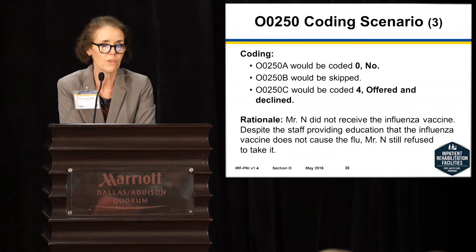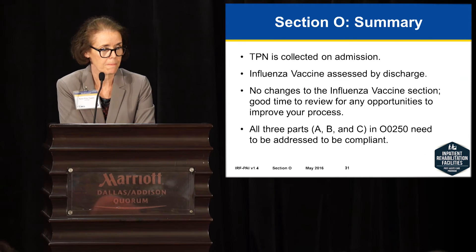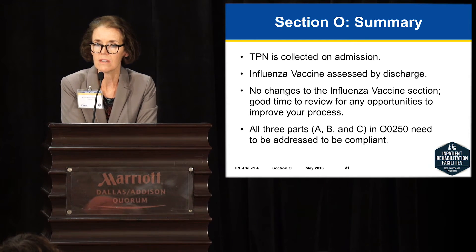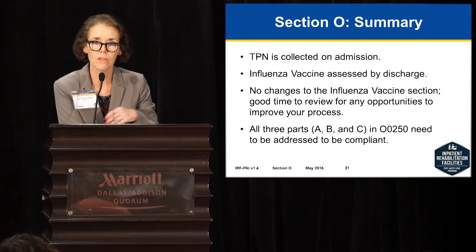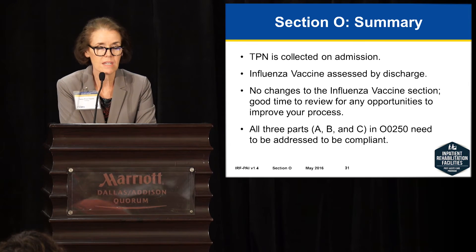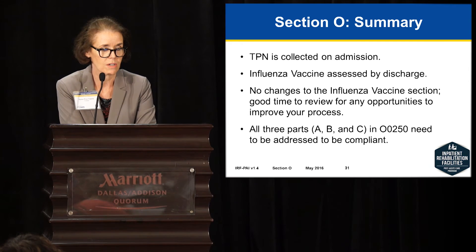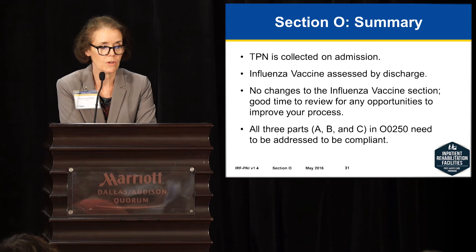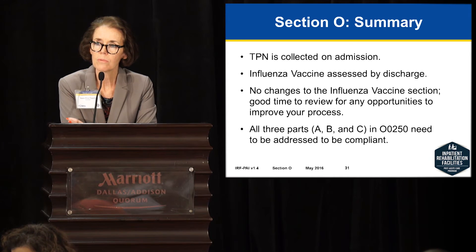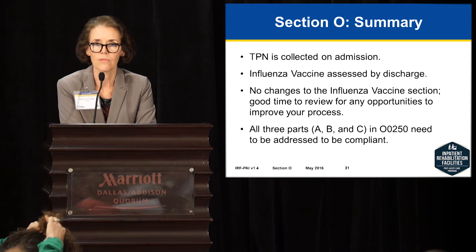None of this is anything you're not comfortable with — it is a review and we thought we'd take the opportunity. For Section O in summary: TPN is collected on admission — it's new, it's a checkbox, and it's in the earlier part of the IRF-PAI for admission items. The influenza vaccine is assessed by discharge. There are three sections to it, of which you complete two of the three depending upon your answer for the first.